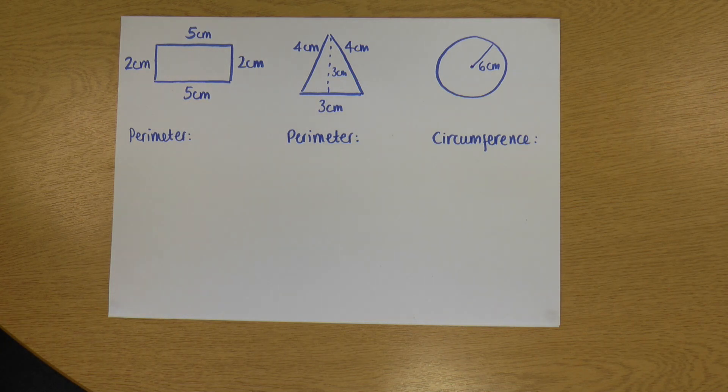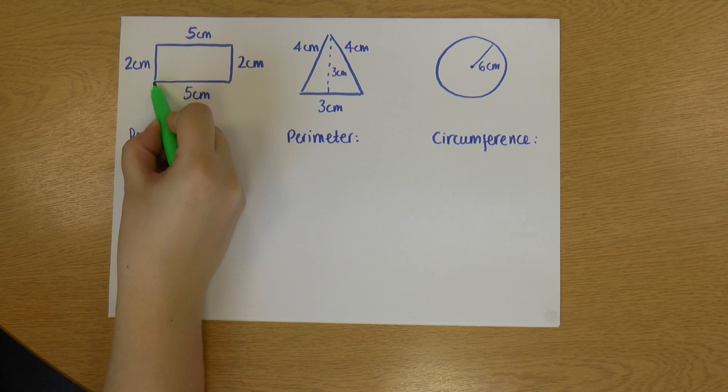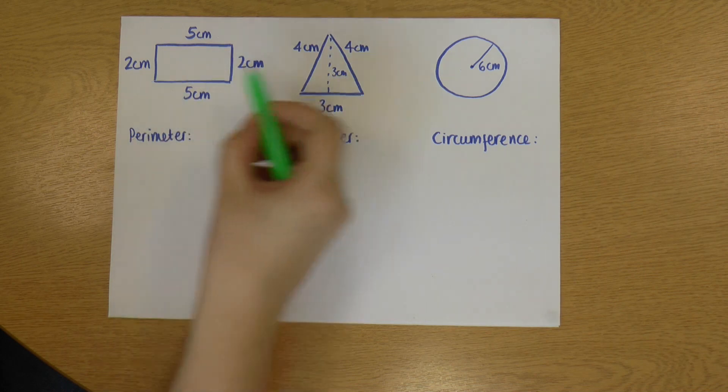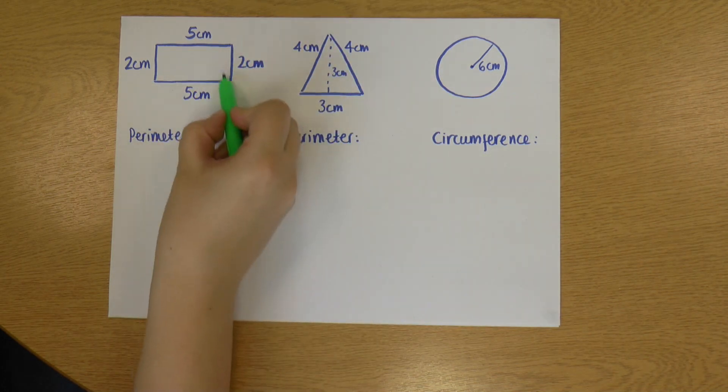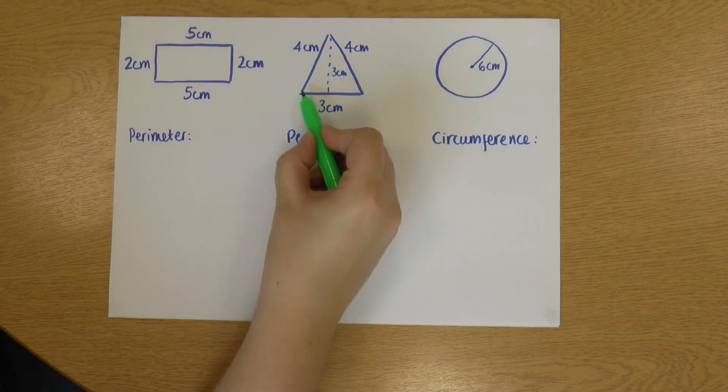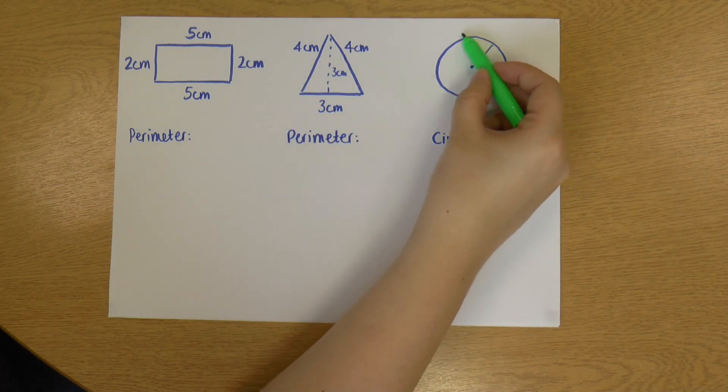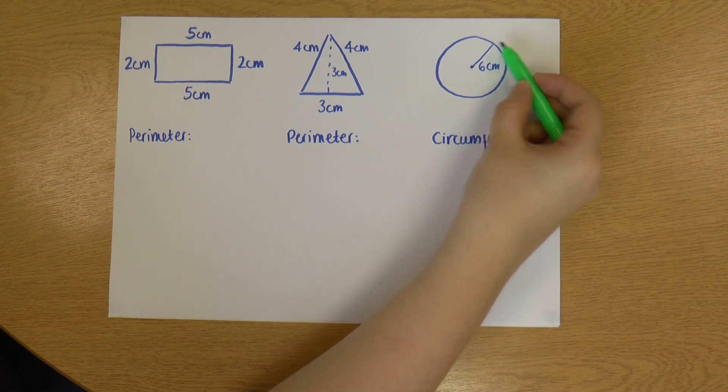So let's start off with what a perimeter actually is. Perimeter is the length of the outside of the shape. So in the rectangle, it's the lengths of all these sides added together. In a triangle, it's the same, just the three sides added together. And with a circle, it's the length of this outside part.